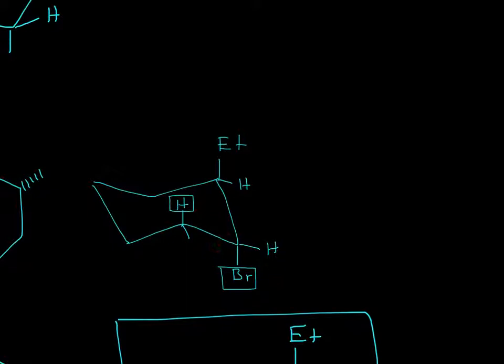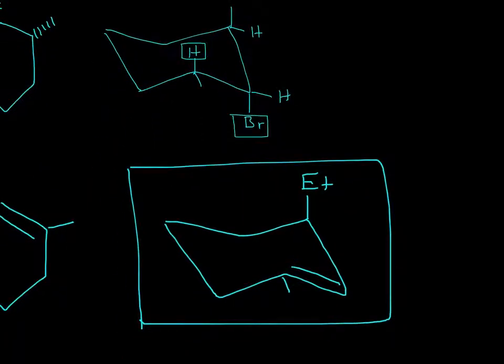That means that this side has to be where the alkene is formed, the double bond. So, the base will take away the hydrogen right here and form the double bond right there.